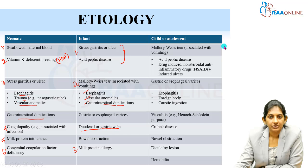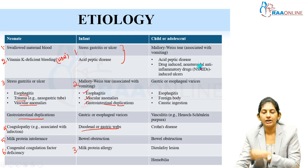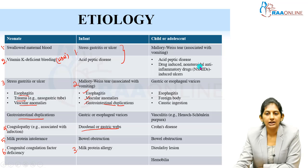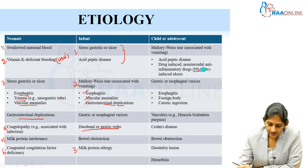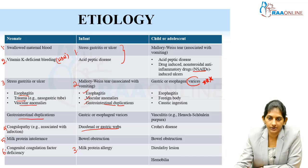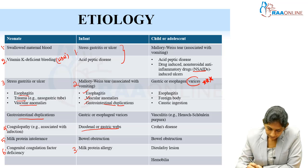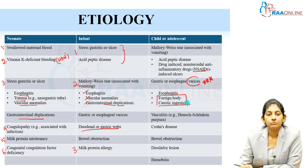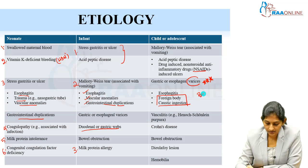For a child or adolescent, consider acid peptic disease, H. pylori disease, NSAIDs-induced ulcers, and rule out varices — these are the most common. When you get a child or adolescent with UGI bleed, you must definitely think of variceal bleeding. Also ask for history of any foreign body ingestion, especially button batteries in toddlers and preschoolers, and caustic ingestion.